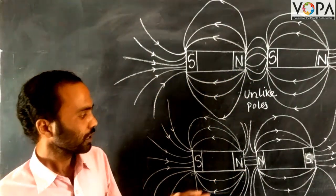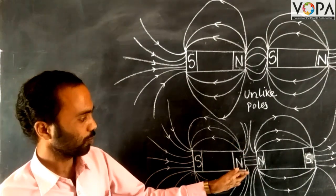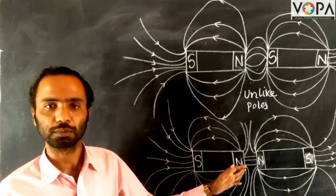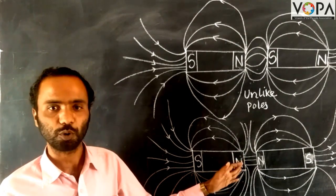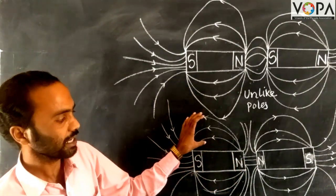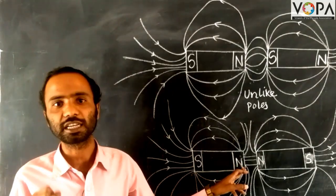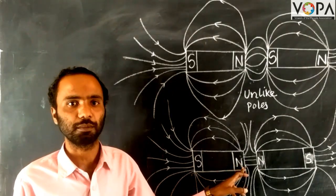Now, the number of magnetic lines of force at a particular point determines the strength of the magnetism at that point. Where the magnetic lines are more concentrated, the magnetic field strength is higher.